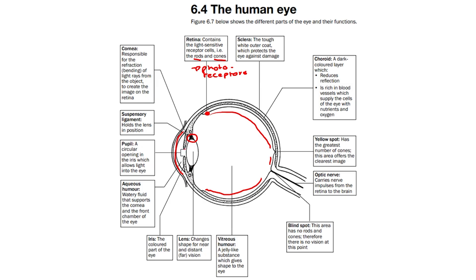We then have the pupil, which is this section over here. It is a circular opening in the iris which allows light to enter the eye. It therefore allows light to flow through the lens and reach the retina.